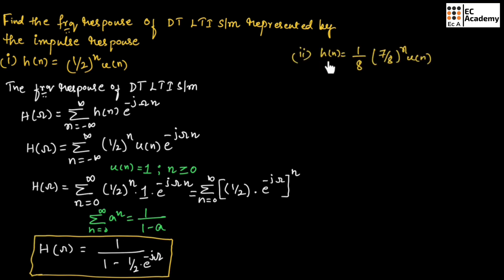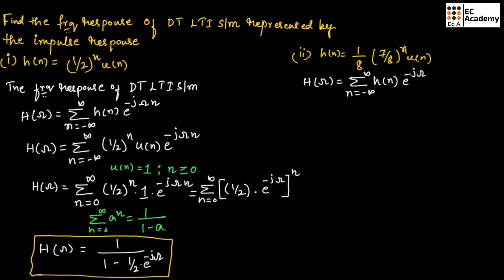Now let us consider the second problem, where H(n) is given as (1/8)(7/8)^n u(n). For this, we need to find the frequency response. We know H(ω) can be written as the summation from n equals minus infinity to infinity of H(n) e^(-jωn).